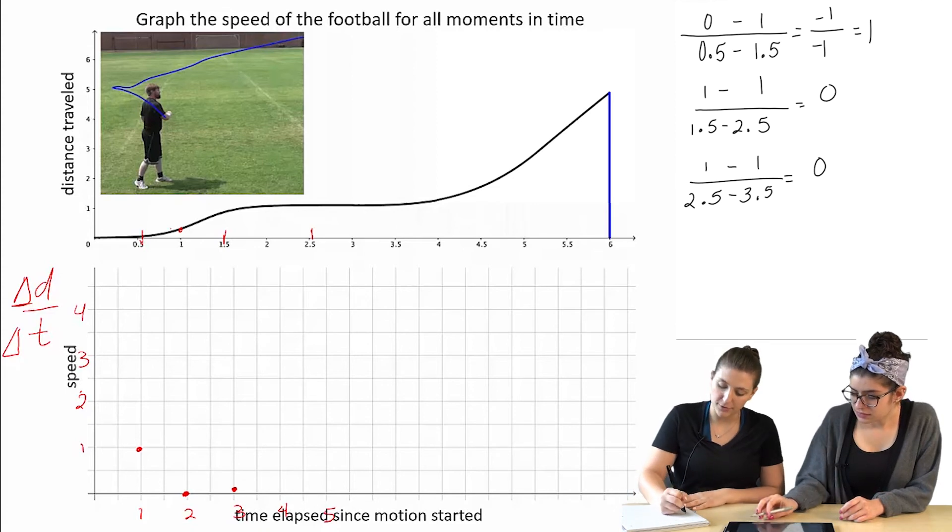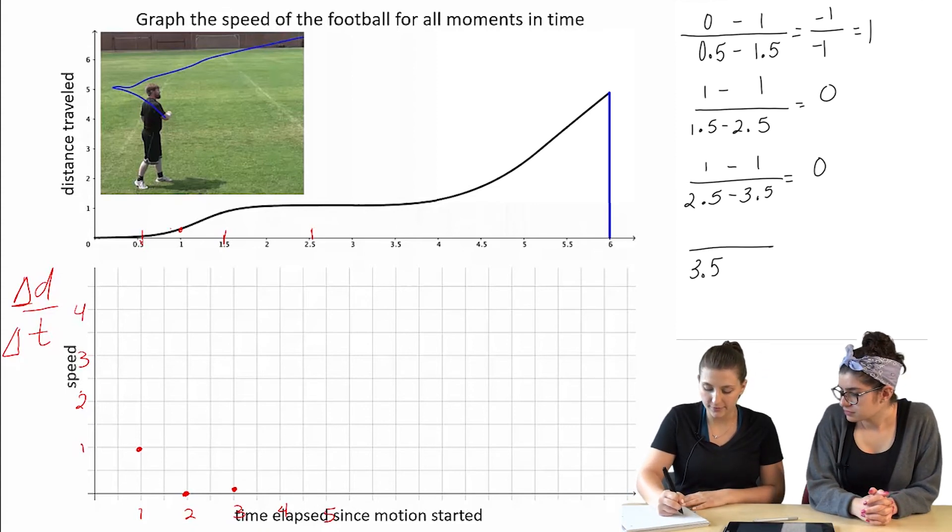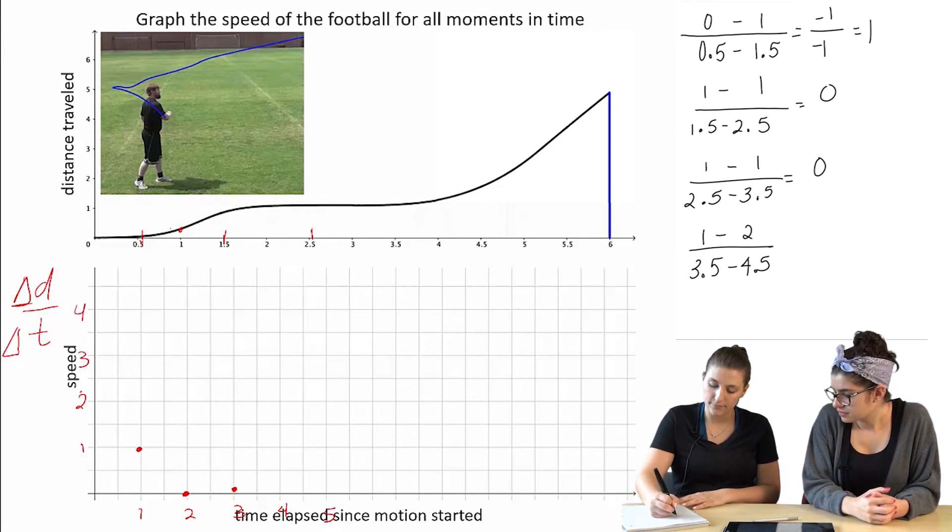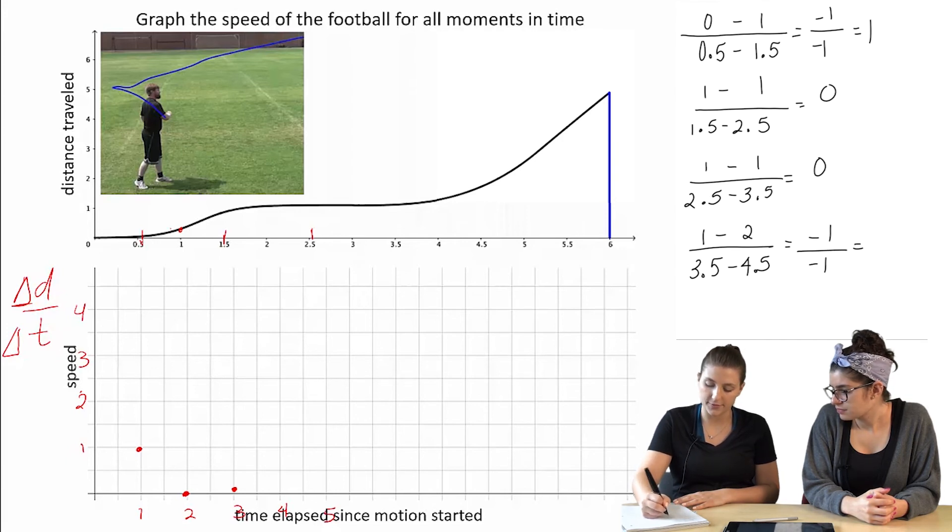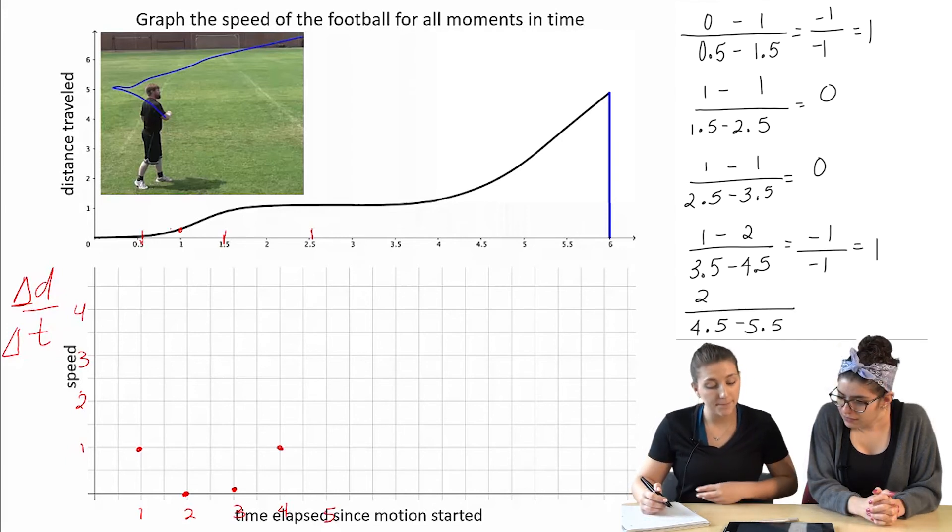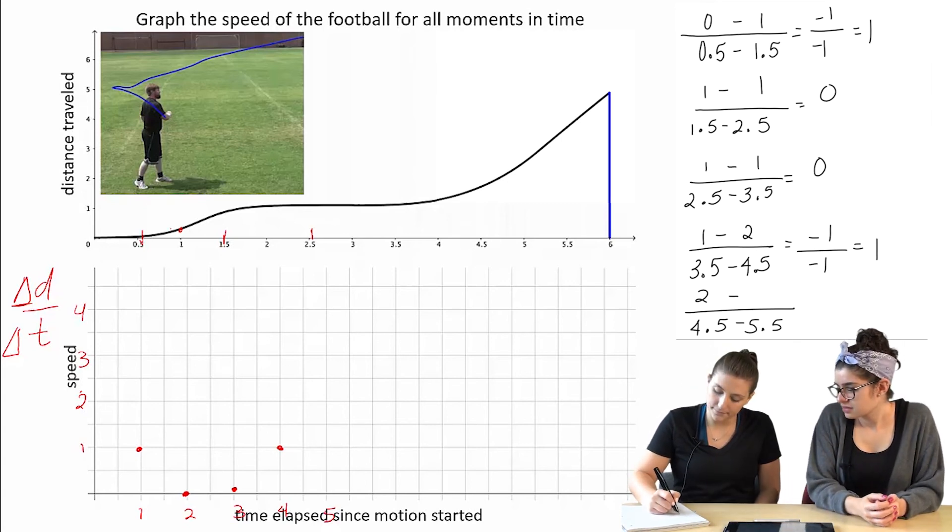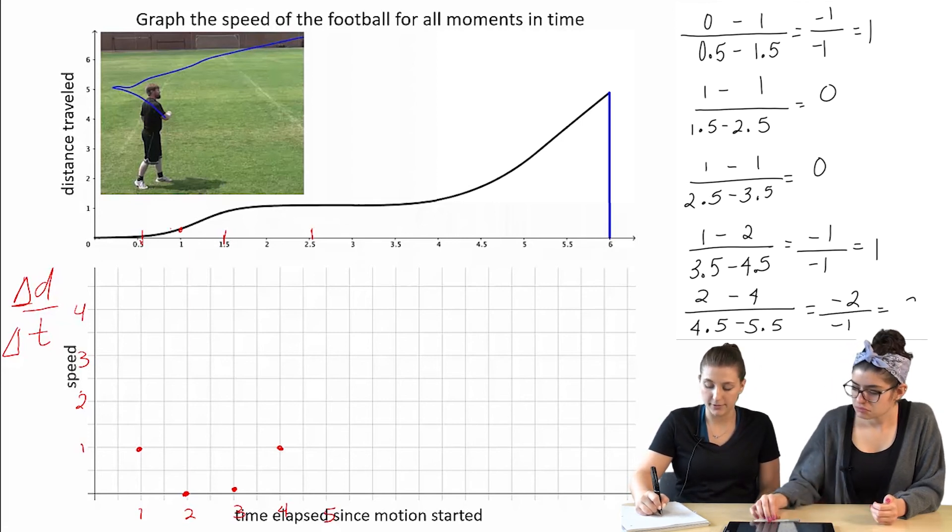That's good. So now we have to do 3.5 and 4.5. It's like 2. Okay. So that gives us 1 again. We have 5.5. Let's see. Oh gosh, 4. Okay. The distance would be 4. It's gonna be negative 2 over negative 1, so it would be 2.